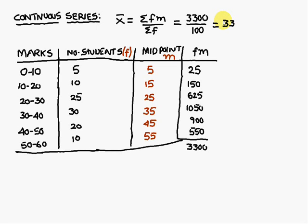This is the continuous series problem. In this way we calculate the average for three different types of problems: individual observations, discrete series, and continuous series. Thank you.